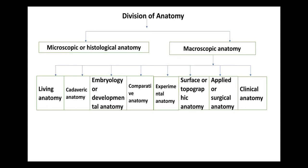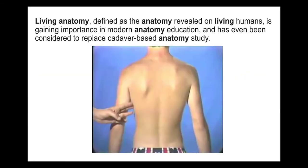We will now look one by one at each individual branch of macroscopic anatomy. Living anatomy is defined as the anatomy revealed on living humans, and it is gaining importance in modern anatomy education. It has even been considered to replace cadaver-based anatomy study.